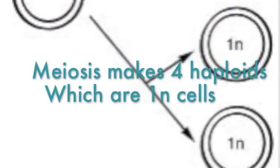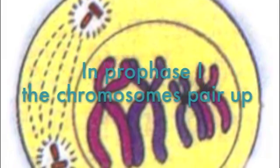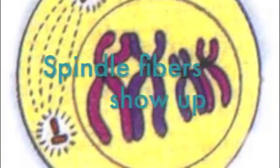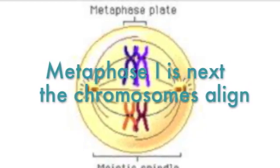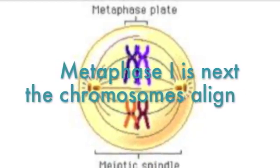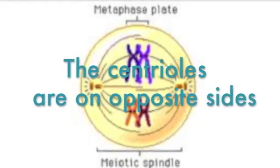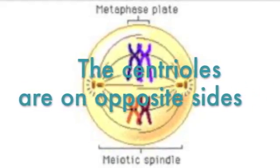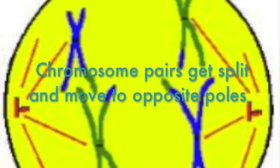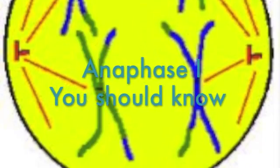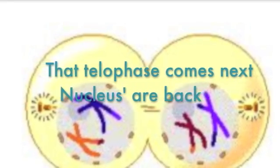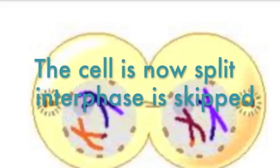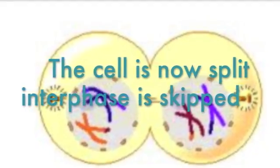In Prophase 1, chromosome pairs line up and spindle fibers show up. Metaphase 1 is next — chromosomes are aligned, centrioles are on opposite sides. Chromosome pairs get pulled and move to opposite poles in Anaphase 1. You should know that Telophase comes next — nuclei are back, so there's no split.